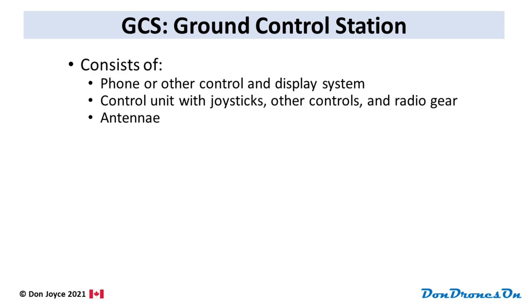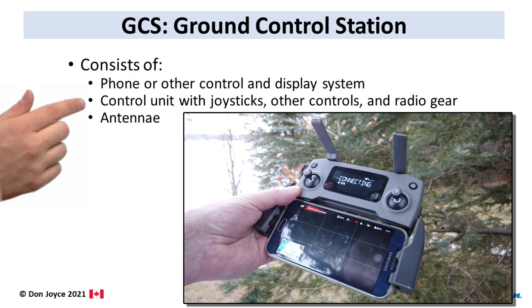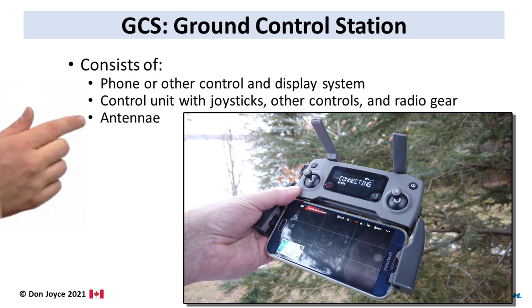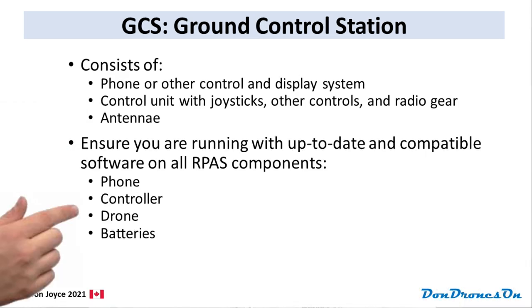The GCS system typically consists of a phone with flight software on it, a control unit with joysticks and lots of other controls, and antennae to communicate with the drone. To operate properly, it is imperative that all systems — the phone, the control unit, the drone, and even the batteries in some cases — are operating with compatible versions of software. So if your system calls for a software update, be sure that all these systems receive and properly accept the update. Don't ever fly with incompatible software versions, and I strongly recommend you only take updates from the manufacturer of your drone.